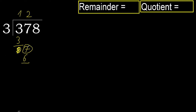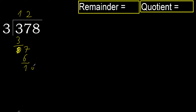7 minus 6 is 1. Subtract. 7 minus 6 is 1. Next — 18. 3 multiplied by 6 is 18, it is not greater.